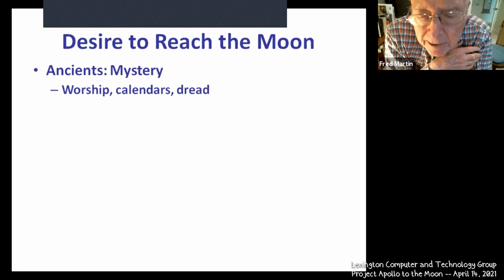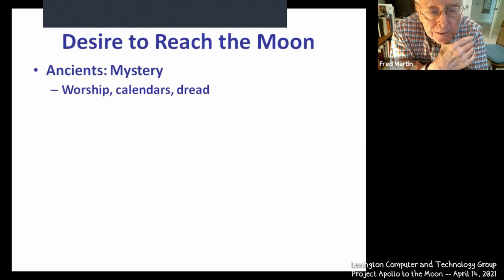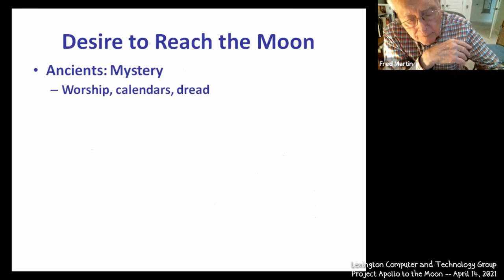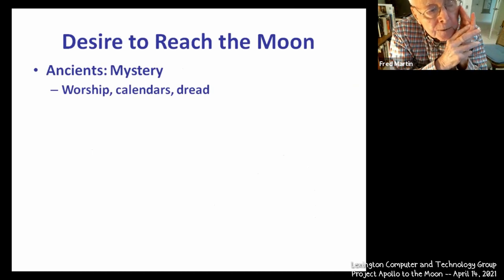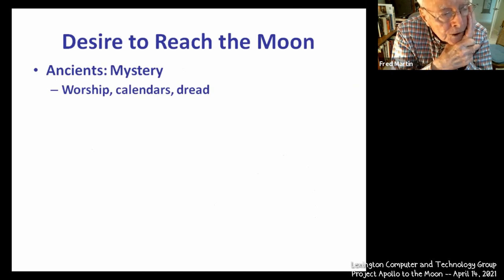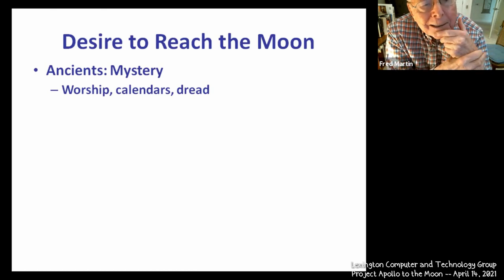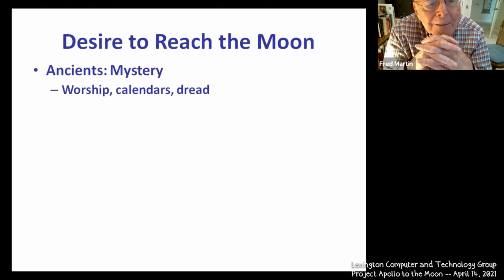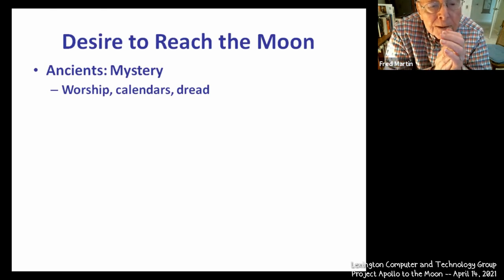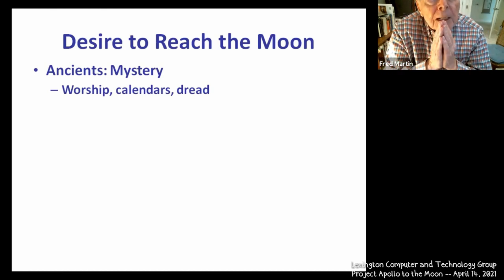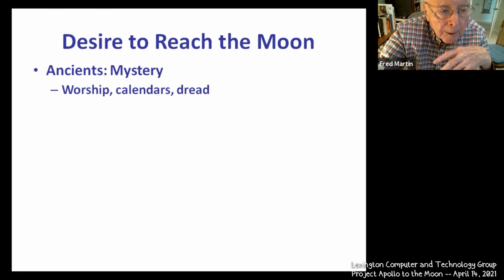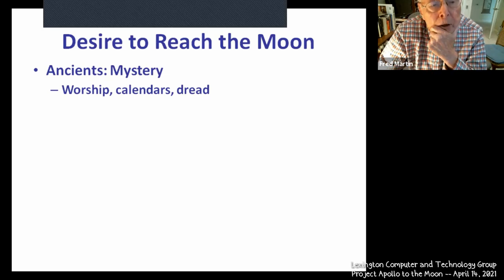Looking back into history, there's been a desire to reach the moon down through the ages. If we go to the ancients, they looked at the moon just like we do today, but it was a total and complete mystery that turned into religious worship of many, many cultures. Sometimes it's a male moon, sometimes a female moon. Sometimes there's a threat of impregnation of women at night by a full moon, and there's the use of the moon for calendars. In ancient times, the moon was ever present to people — a desire to understand and reach out to it, not knowing where it was or how far it was.